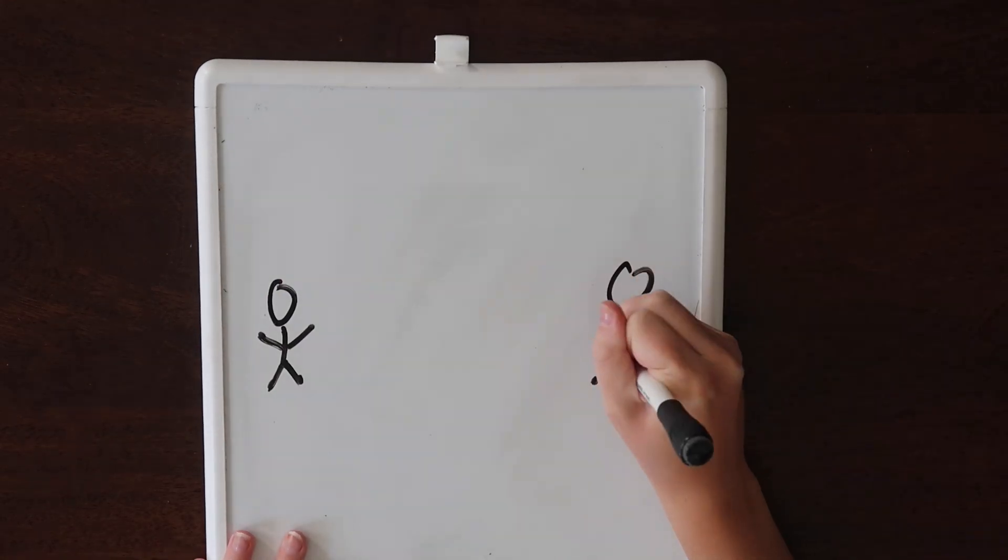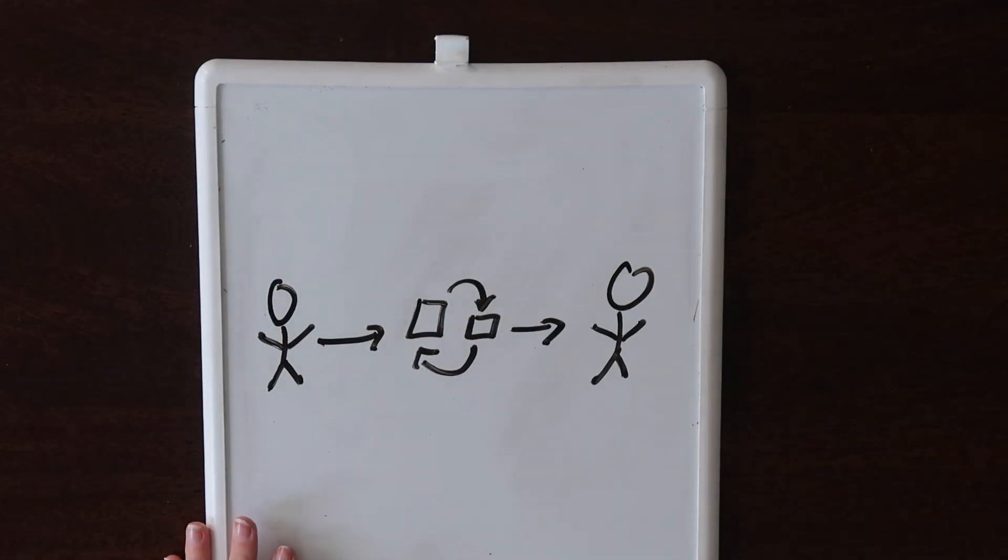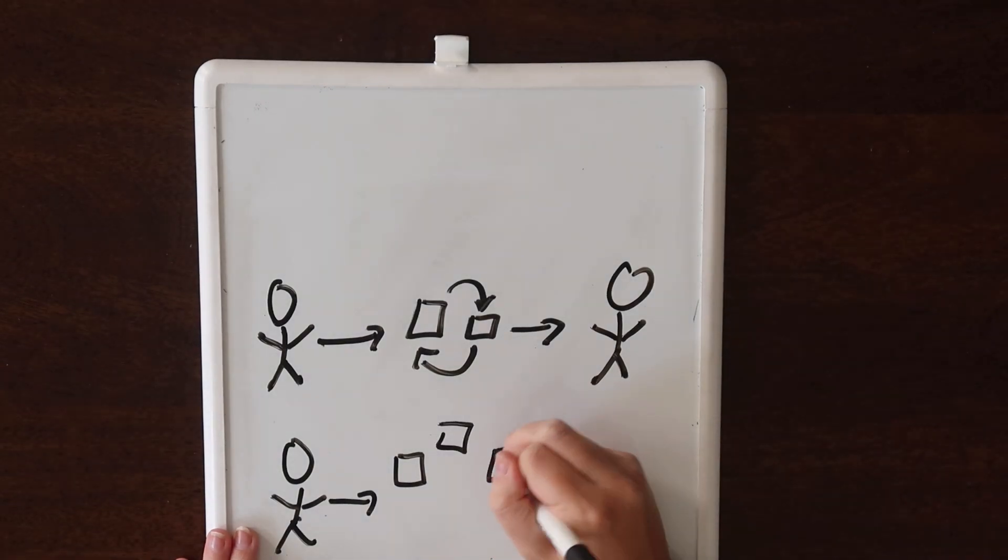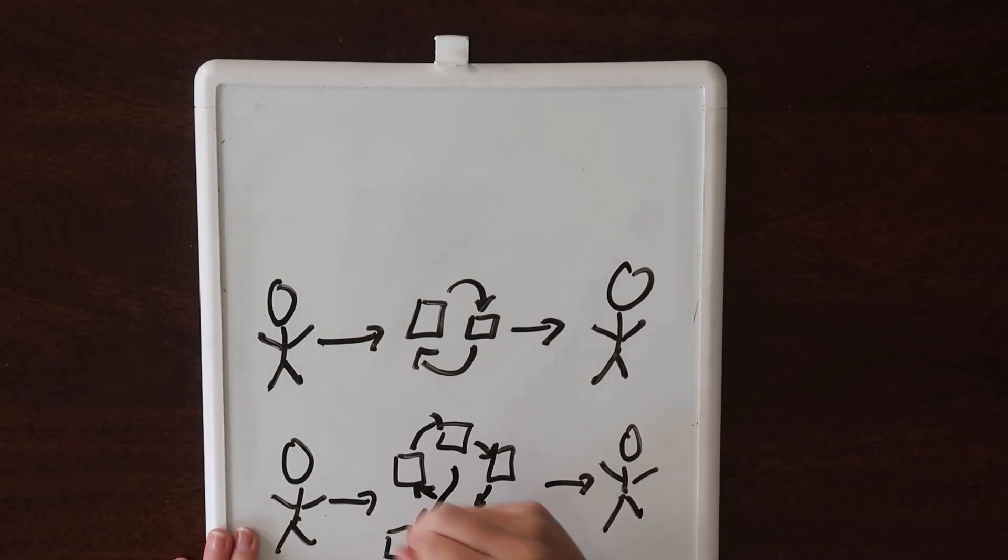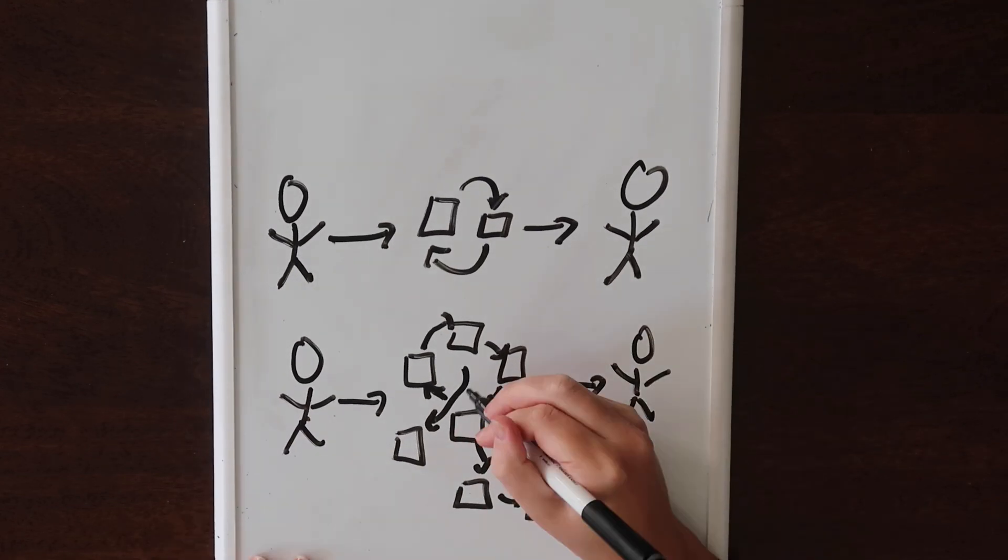Now, if a given blockchain only has two machines on the network, it's not really decentralized. You need to have enough machines on your blockchain in order for it to be truly decentralized.